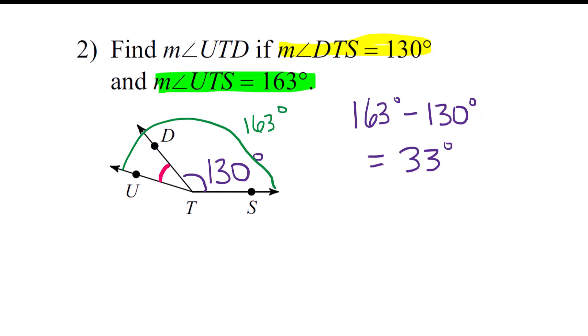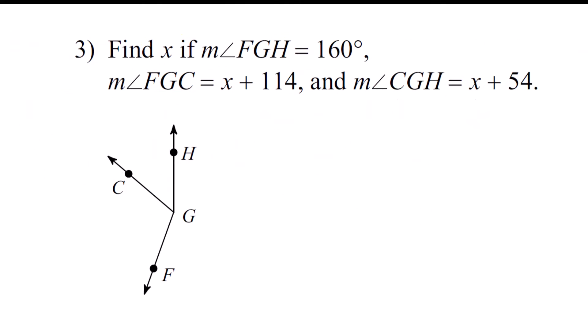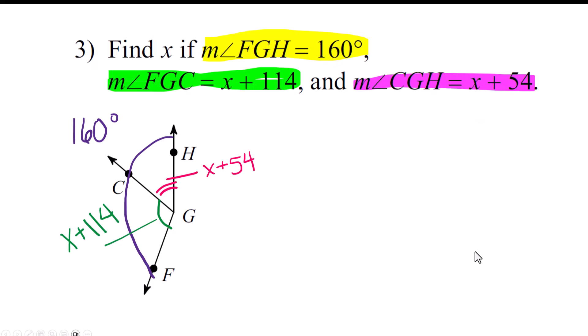All right, hope you got that. This one I want to do for you. This is where it starts to get a little gnarly - we're going to bring in algebra into geometry. All right, FGH is the entire angle. FGH is the whole thing, and the whole thing is 160 degrees. FGC is this guy right here, it's x plus 114, and the other part of that angle is x plus 54. Remember, this is angle addition, very much like segment addition. You add two little pieces together and make it equal to the whole thing.